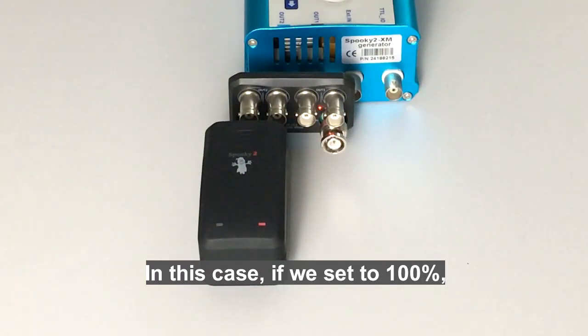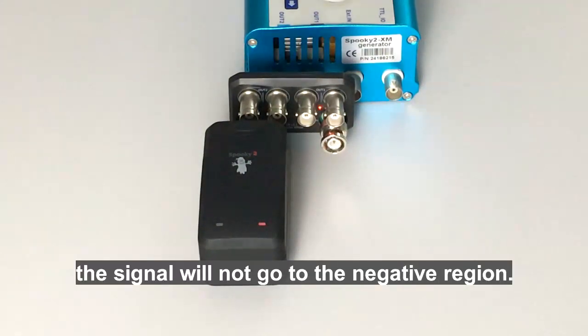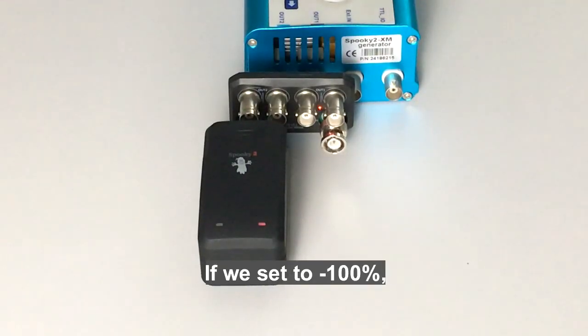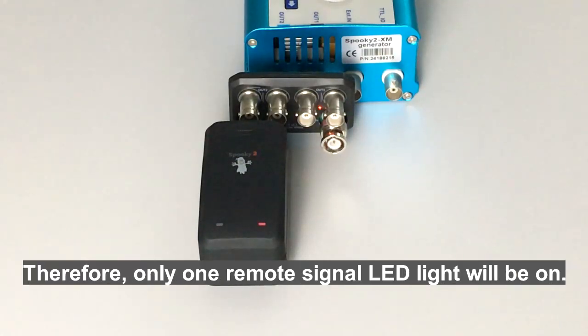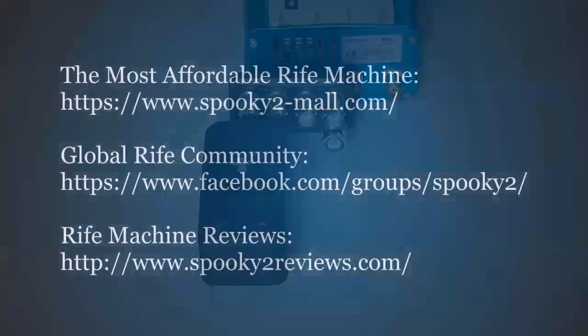If we set to negative 100%, the signal will not go to the positive region. Therefore, only one remote signal LED light will be on. Thank you for watching this video.